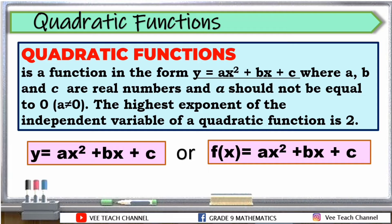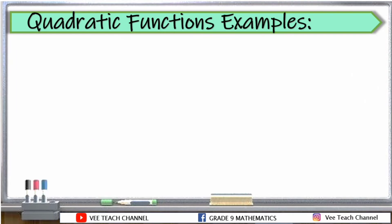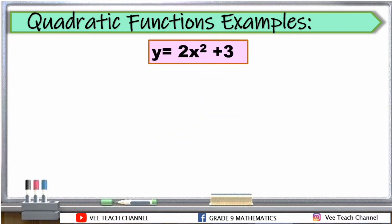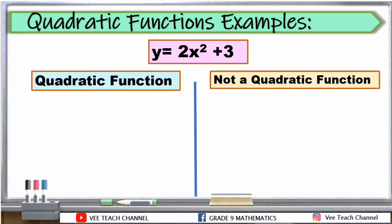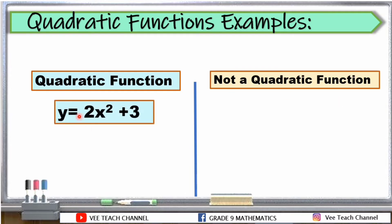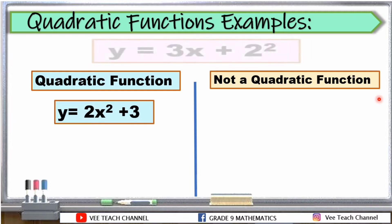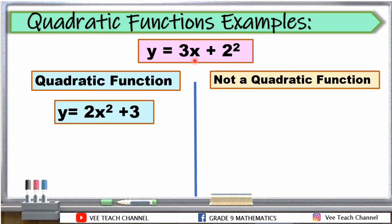Again, ang basa natin dyan sa f na may x is f of x. Now that we have our equation for our quadratic function, let us identify the examples of it. We have y is equal to 2x squared plus 3. Do you think this is a quadratic function? The answer is, it is a quadratic function. Why? The highest exponent of our variable here is 2. It's okay that we only have 2 terms in our equation, as long as it has 2 as the highest exponent of the variable.